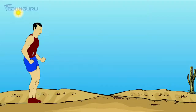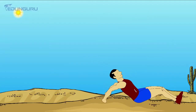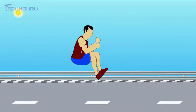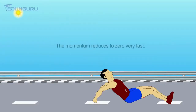Now the third example is related to long jump. In long jump the person falls on sand. Why are we using sand? Because sand increases the time for momentum to be reduced to zero, so less force acts and the person remains unaffected or uninjured. If we use a hard floor, the momentum reduces to zero very fast, a large amount of force will act, and the person may get injuries.